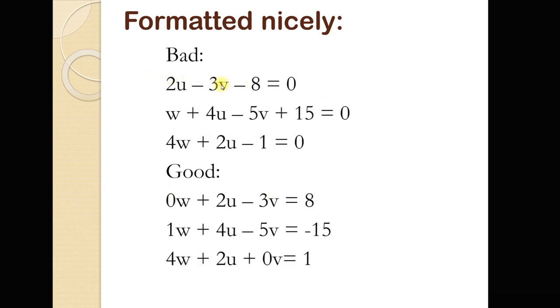In the first equation, there's no W, or it would be better of us to think of it as there is zero W. In the third equation, there's no V, or there are zero V. Also, there's these constant terms to the left of the equal sign. We would like to move all those over to the other side. So in the first one, add eight to both sides. In the second one, subtract 15 from both sides.